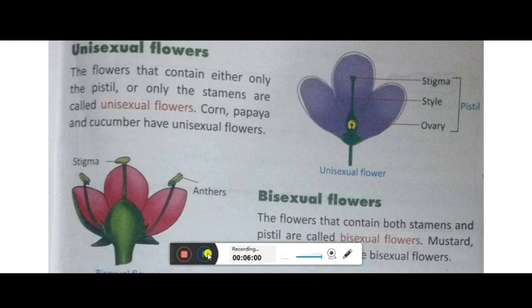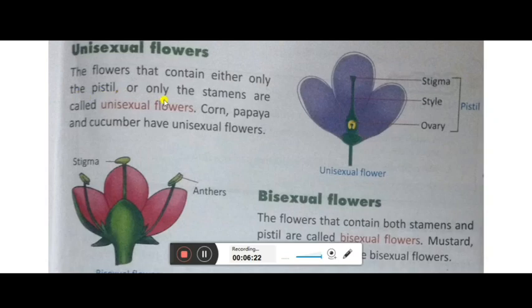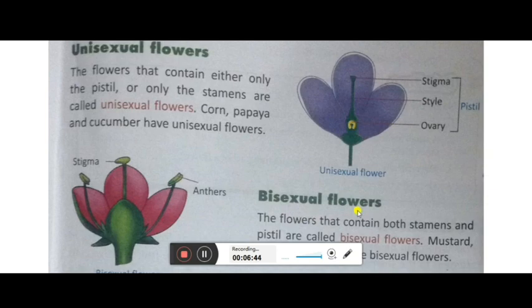Now we will study about the types of flowers. According to their reproductive roles, there are two kinds: unisexual flowers and bisexual flowers. If a flower has either only the pistil or only the stamen — meaning only one reproductive part, either male or female — it is called a unisexual flower. Examples are corn, papaya, and cucumber. When both stamen and pistil, that is both male and female reproductive parts, are present in the same flower, it is called a bisexual flower, like mustard.